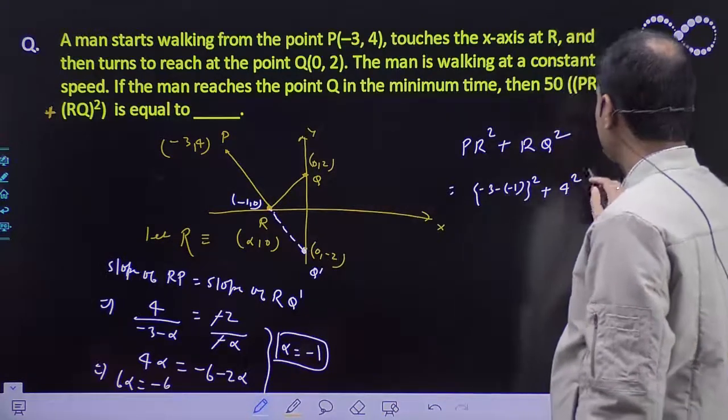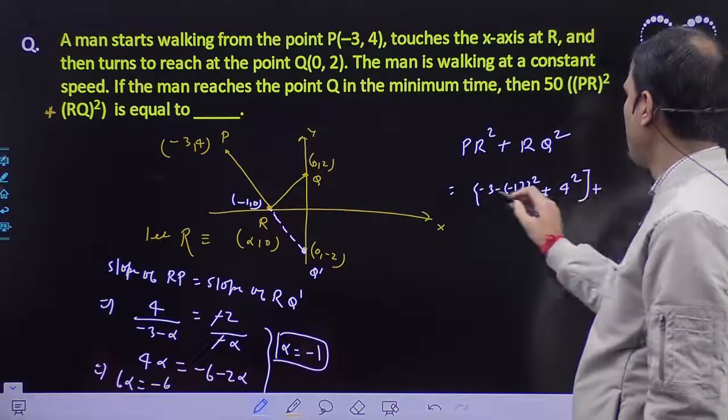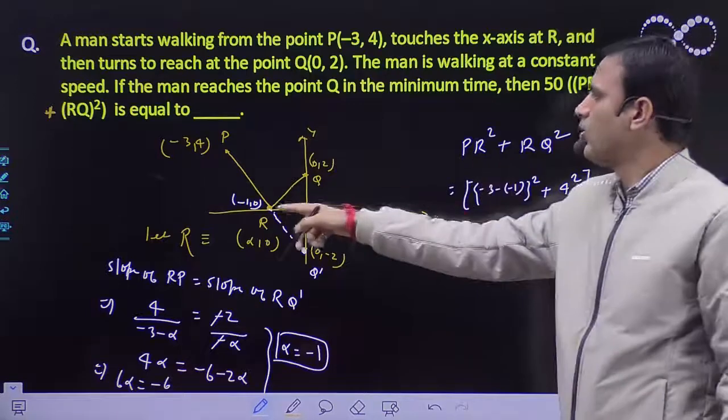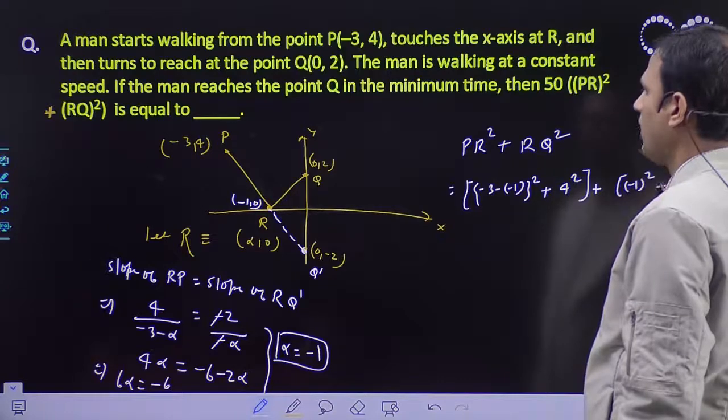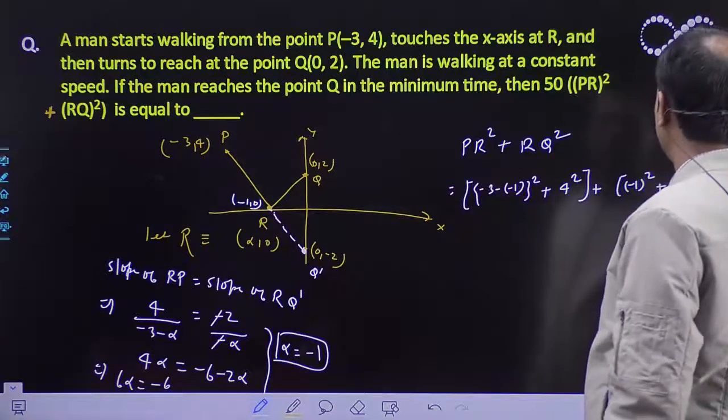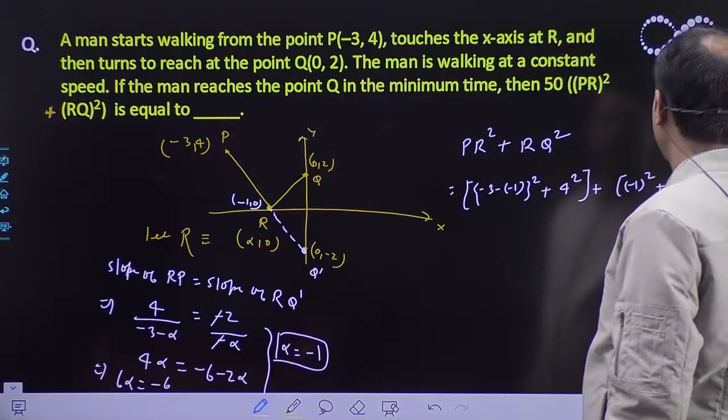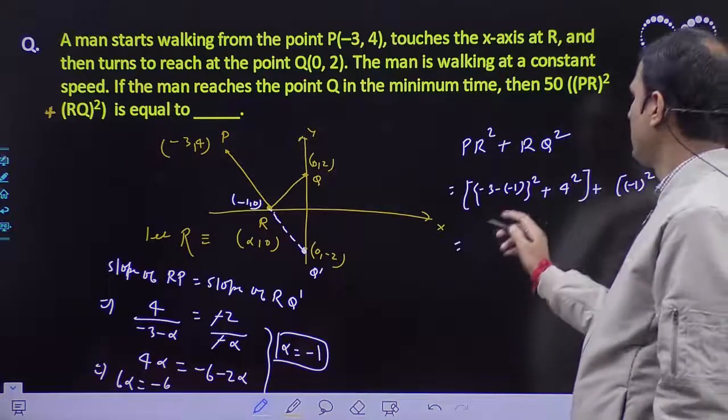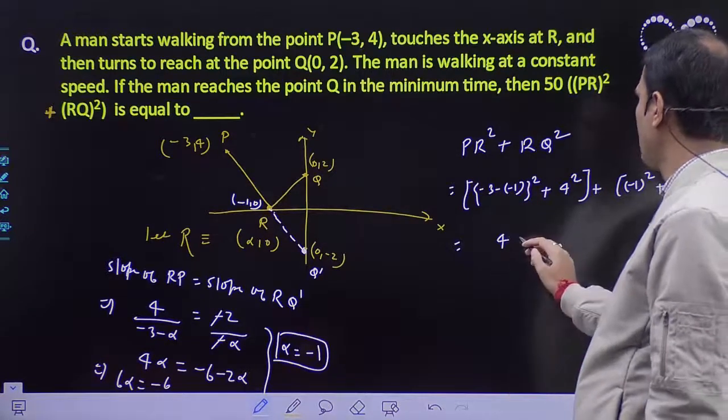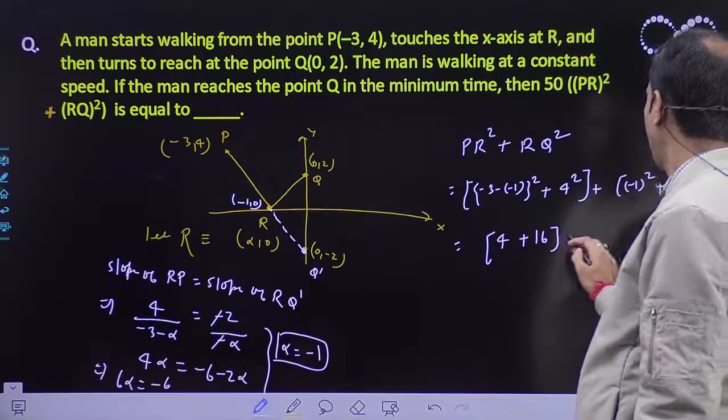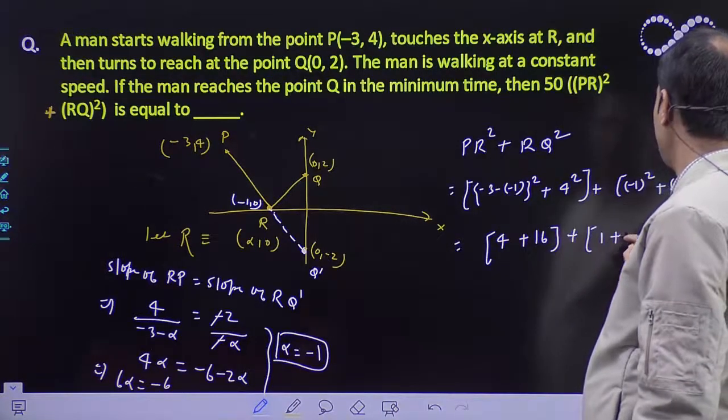Plus RQ: (-1 - 0)² + (0 - 2)², that's (-1)² + (-2)², which equals 1 + 4. This gives PR² as 20 and RQ² as 5.